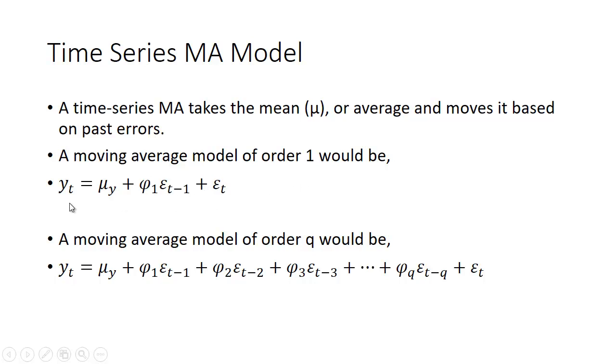And just like with the AR models, you're not limited to having only one lagged error term or one lagged autoregressive term. You can have many. In the AR model, we said it was of order p. Here we use the letter q. So you can have a moving average model of order q. So again, you have the mean here, and then you have this coefficient times the first lag error term, plus a different coefficient, phi 2, times the error term lagged 2 periods, etc., all the way out to lagged q periods.